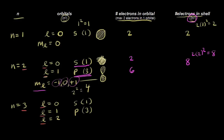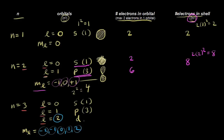Let's focus on l is equal to two. The allowed values for the magnetic quantum number go from negative l to positive l — so if l equals two, we get negative two, negative one, zero, one, and two: five values, meaning five different orientations. When l is equal to two, we call this a d orbital, so we have five d orbitals. The total orbitals in this energy level: one plus three plus five equals nine, which equals three squared — confirming that total orbitals equals n squared.